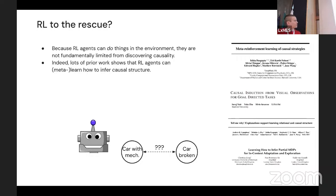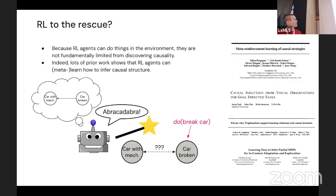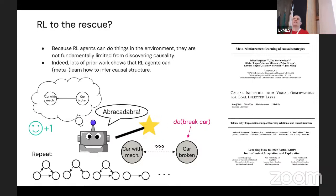How does this work? You take a reinforcement learning agent, put it in a situation where it can do interventions on some causal structure, let it observe what happens, let it infer causal structure, test that inference, and reward it if it gets it right. If you do this across enough causal structures — the meta-learning part — you find the RL agent is capable of discovering a strategy that's relatively reliable for discovering causal structures and exploiting them.